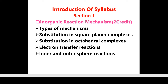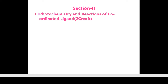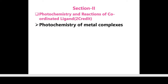That was our syllabus for section 1. Moving to section 2, which is photochemistry and reactions of coordinated ligands. Here we highlight photochemistry of metal complexes, covering photochemical reactions, prompt and delayed reactions, quantum yield, recapitulation of fluorescence and phosphorescence, photochemical reactions irradiating at d-d and CT bands, transitions in metal-metal bonded systems, and photochemical reactions involving chlorophyll.